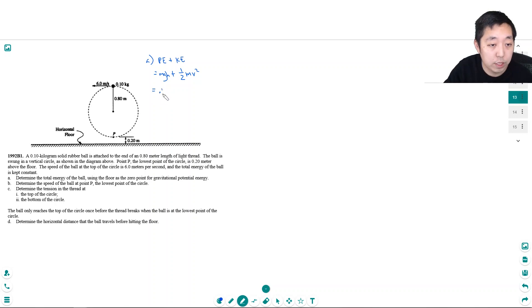M is 0.1 kilograms. G is 9.8 meters per second squared. Its height is a little bit tricky. It's 0.8 here but this is also 0.8 because it's a circle. So 0.8 plus 0.8 plus 0.2. So that's 1.8 meters plus one half times 0.1 kilogram times its velocity which was 6 meters per second quantity squared. 3.564 joules.